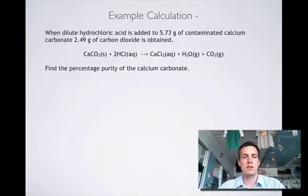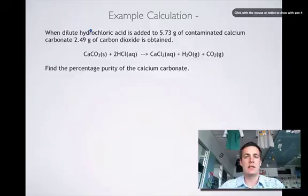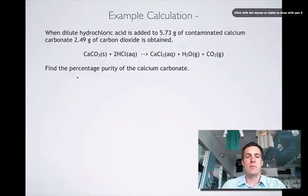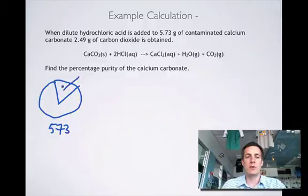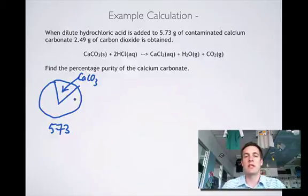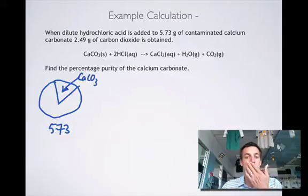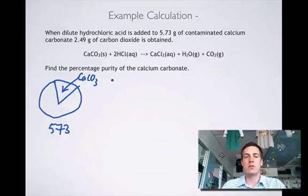Here is the example that we're going to do. It says when dilute hydrochloric acid is added to 5.73 grams of contaminated calcium carbonate. So I have not 5.73 grams of calcium carbonate, but 5.73 grams of something in which there is calcium carbonate. I've just represented it as a slice of a pie. We don't know what percentage is calcium carbonate, but we do know that the percentage is going to be the mass of the pure over the total mass.